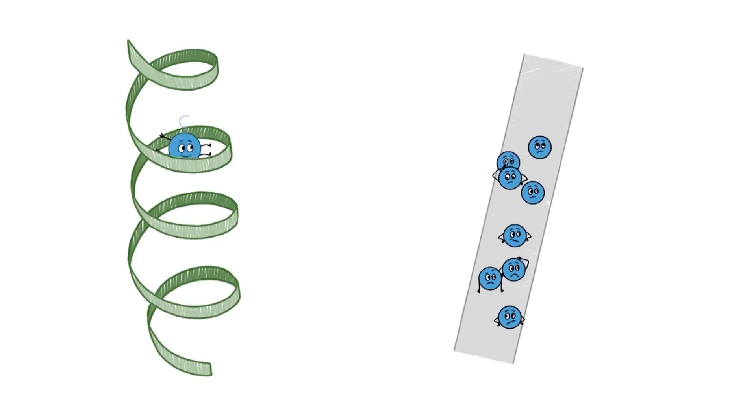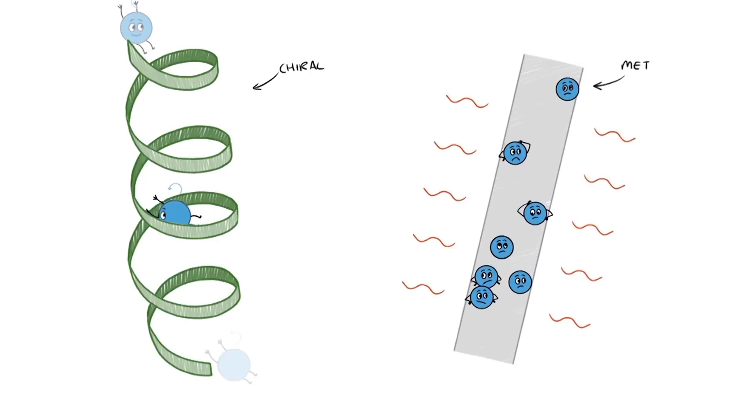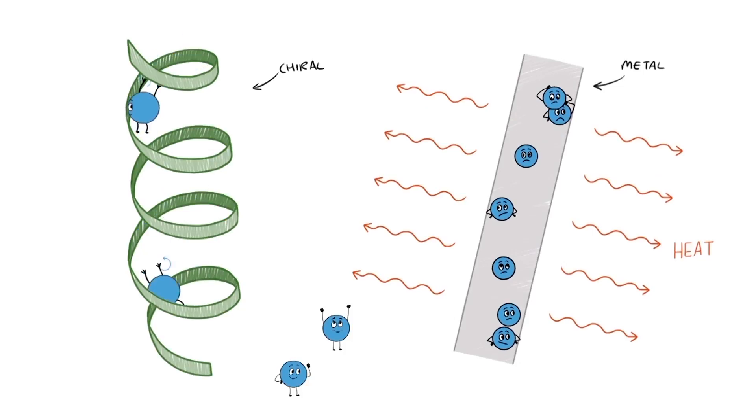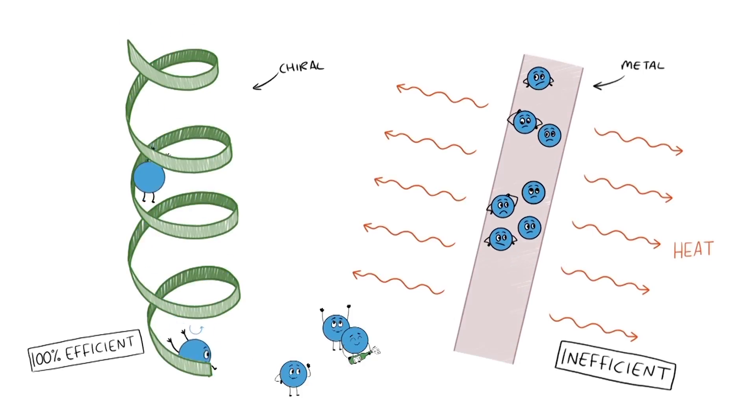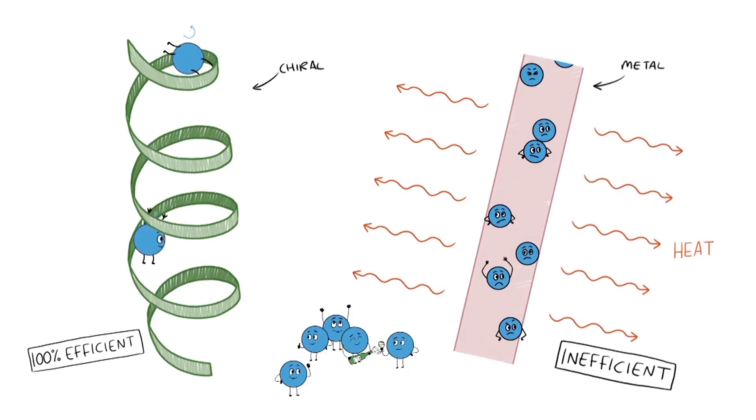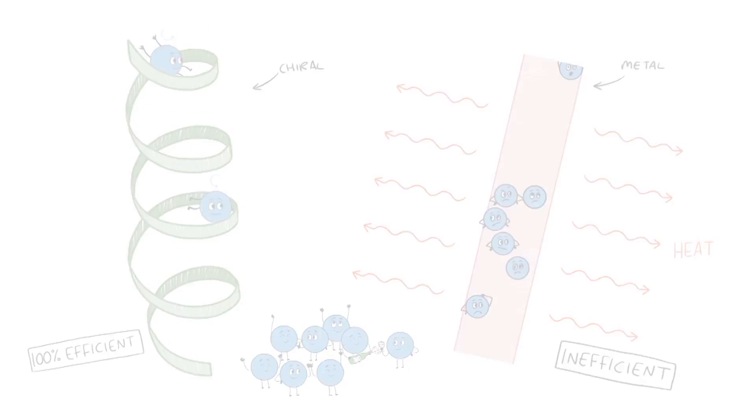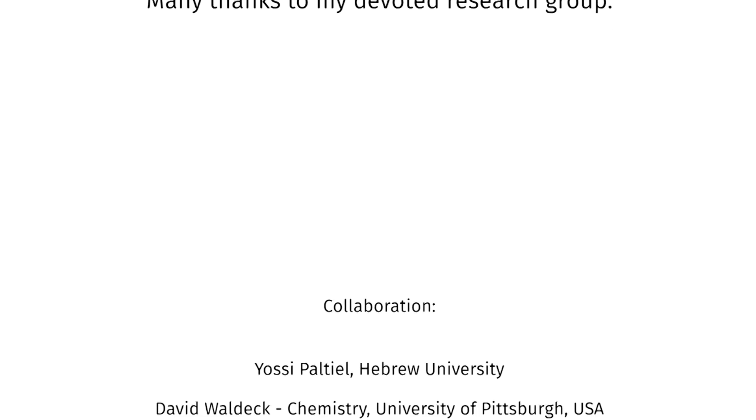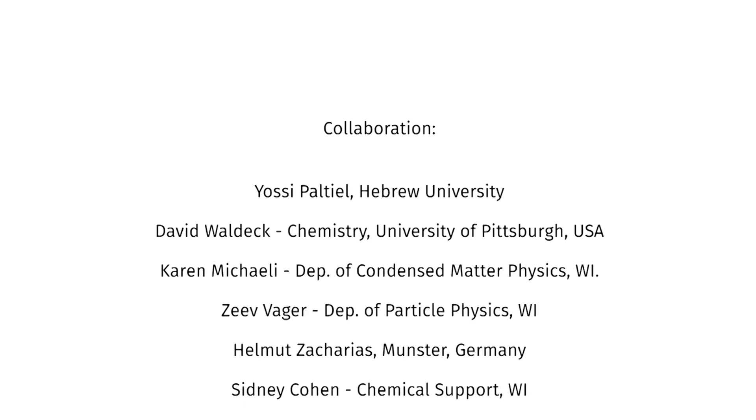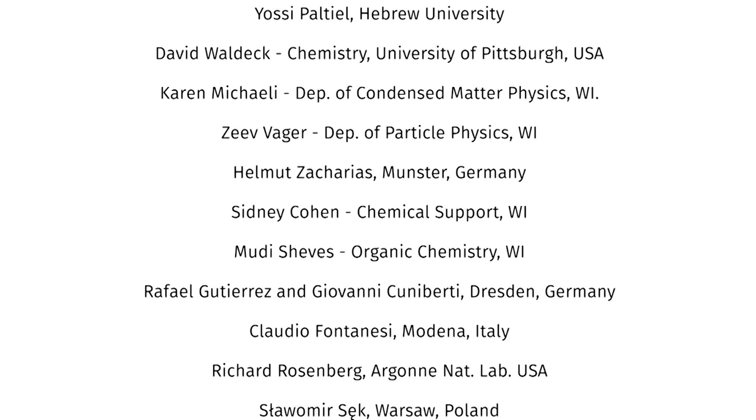Hence, a possible answer to the question posed is that nature picked proteins because they are chiral, and therefore allow electron transfer through them in a very efficient way. Now it is up to the scientific community to probe the role of spin in bioprocesses. Thank you.